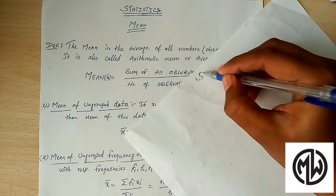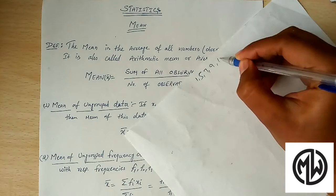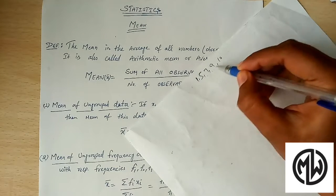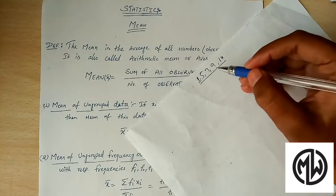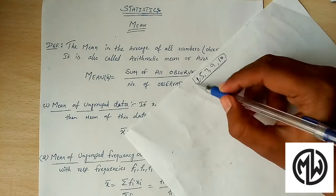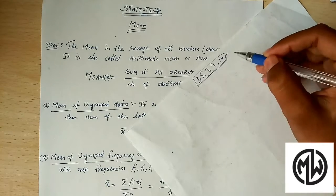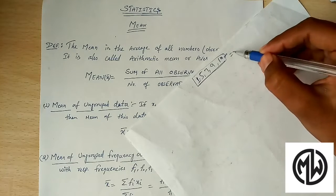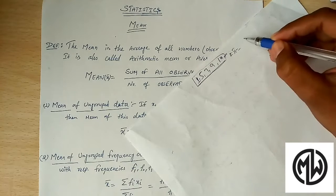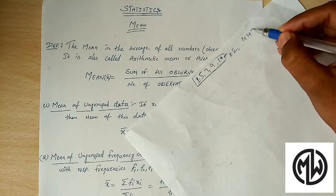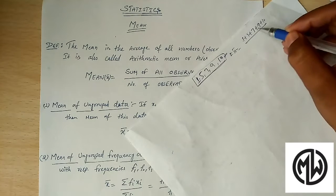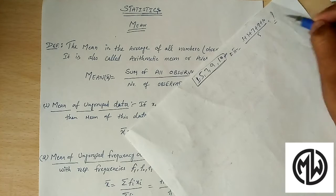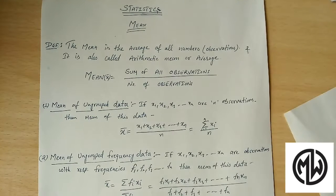For example, we have 1, 5, 7, 9, and 10 — that is 5 observations. The mean of this is: sum of all observations (1 + 5 + 7 + 9 + 10) divided by the total number of observations, which is 5. Calculate this and you will get the mean of these 5 numbers.